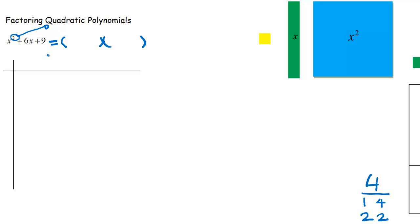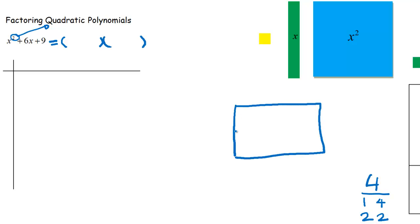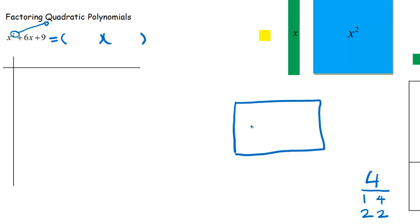It's almost like going backwards. Instead of starting with the information on the outside of the box — if you remember the box method — we're now going to look at all the tiles and information inside the box. Our goal is to get to that factored form, meaning undoing the expression into something times something.